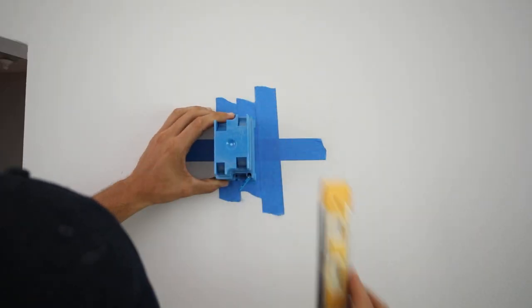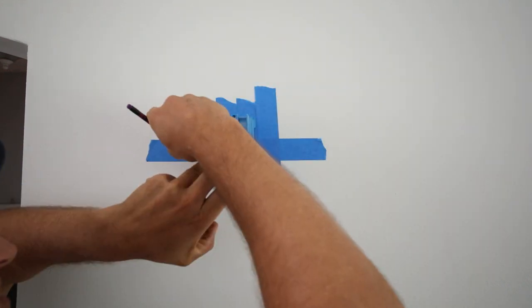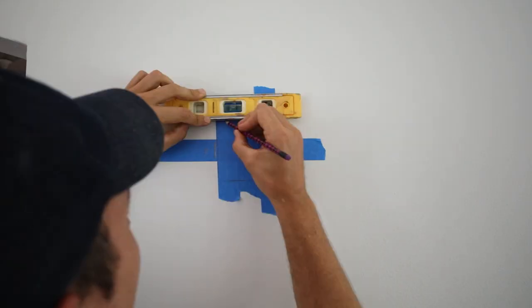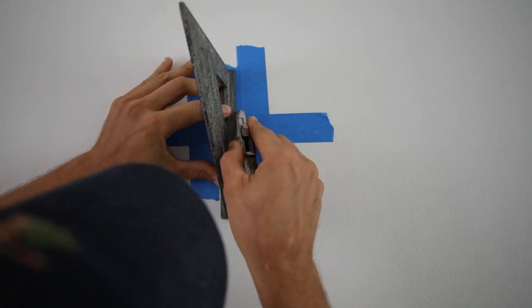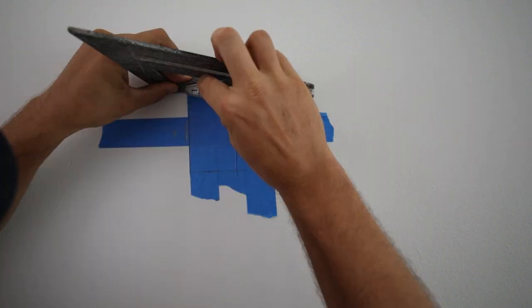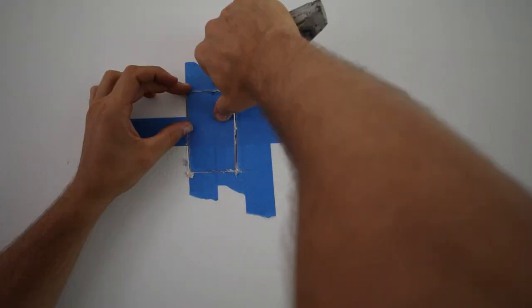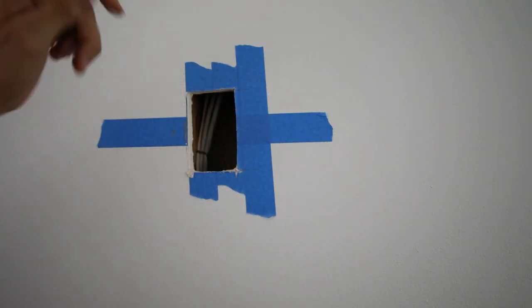I use some painter's tape and then I get my new light box. This is an old work light box. I trace it and connect the lines with a small level, then I score my lines with a razor. I come back and score several more times, then I can knock that piece of drywall out and I have a nice hole to work with.